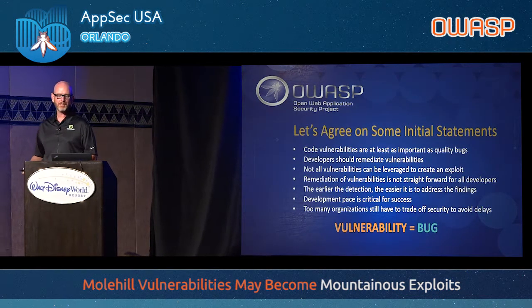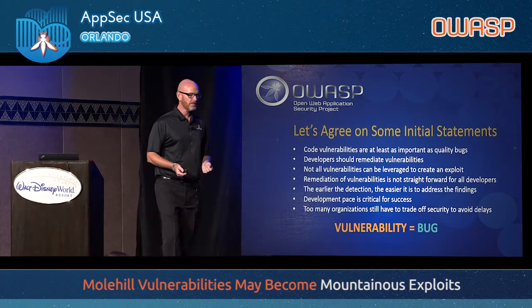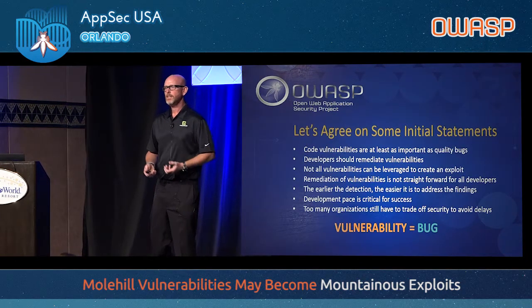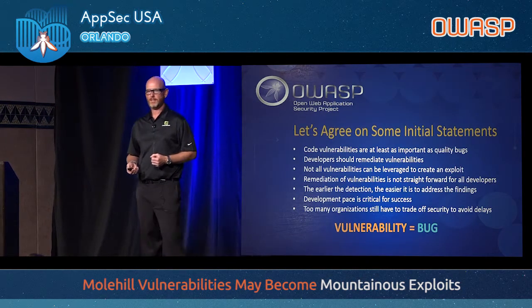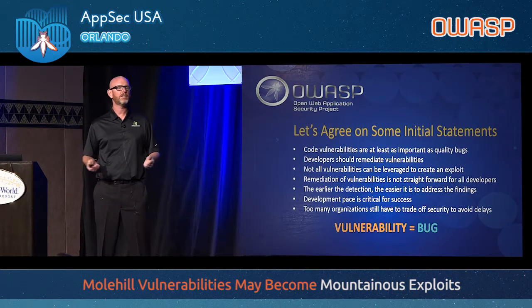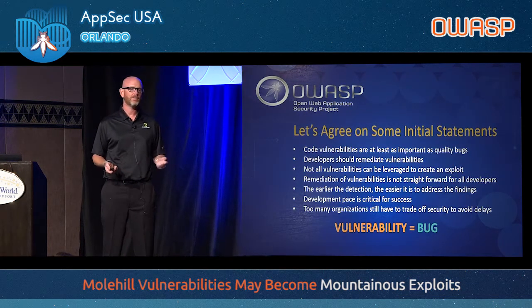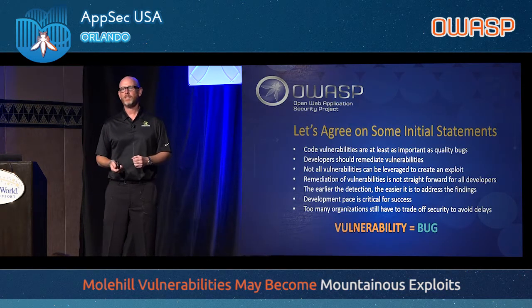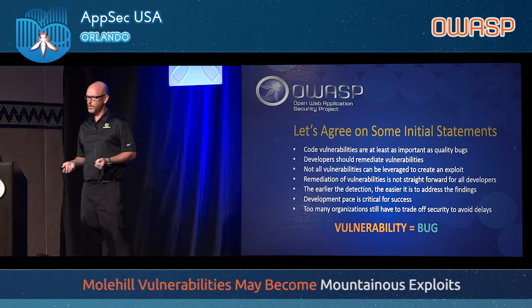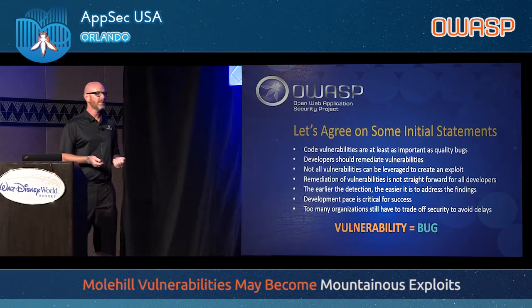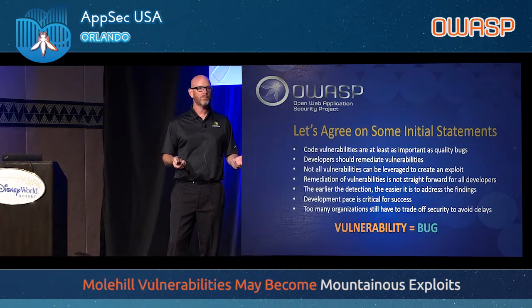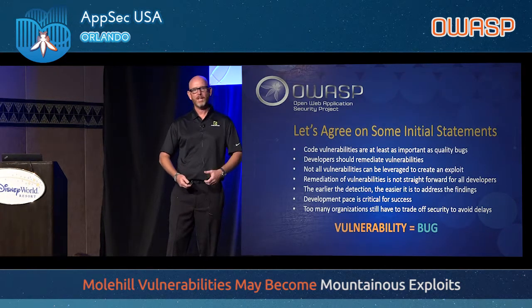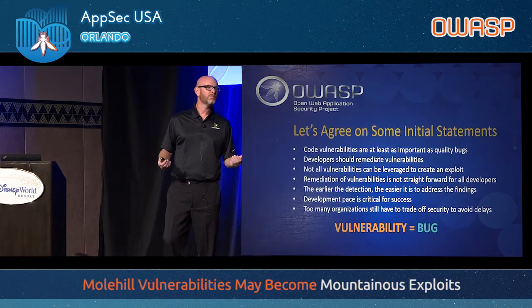Not all vulnerabilities can be leveraged to create an exploit. In static analysis there's always debate about false positives and false negatives. Developers fight back saying, 'The sun, stars, and moon have to align for that vulnerability to come to light.' But if A, B, and C happen in concert, you will have a vulnerability. Even though a vulnerability is not exploitable by itself, things may change. You may have an internal application designed for employees, and suddenly you expose it to customers and partners — now the threat landscape is much bigger for that same vulnerability.